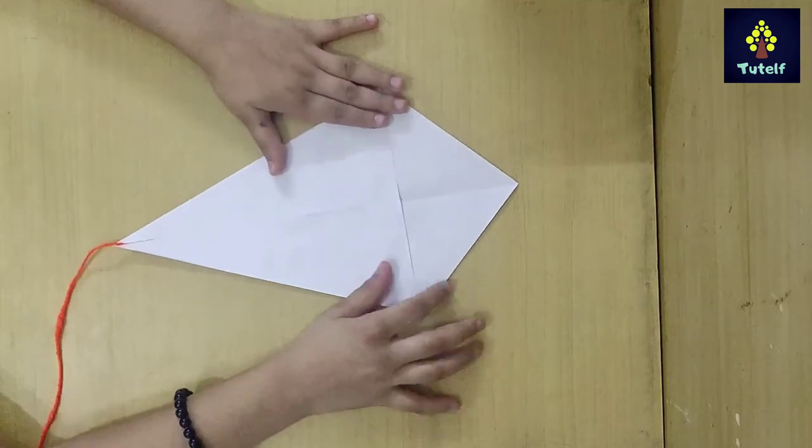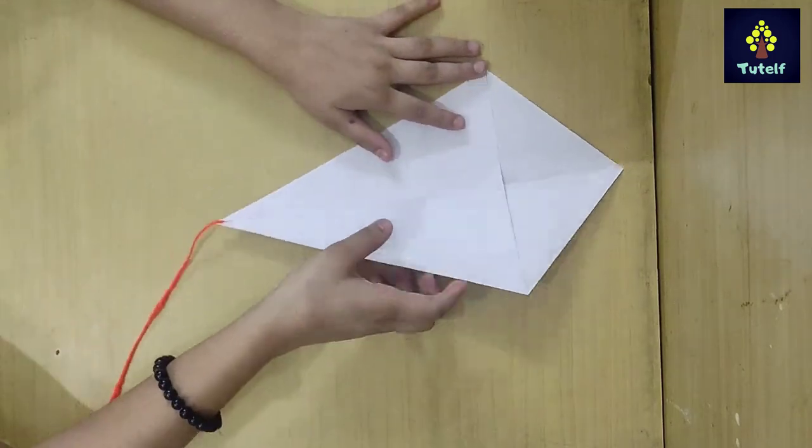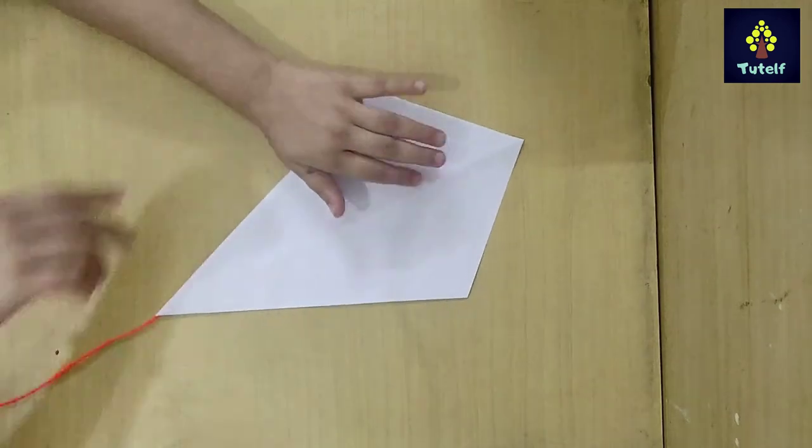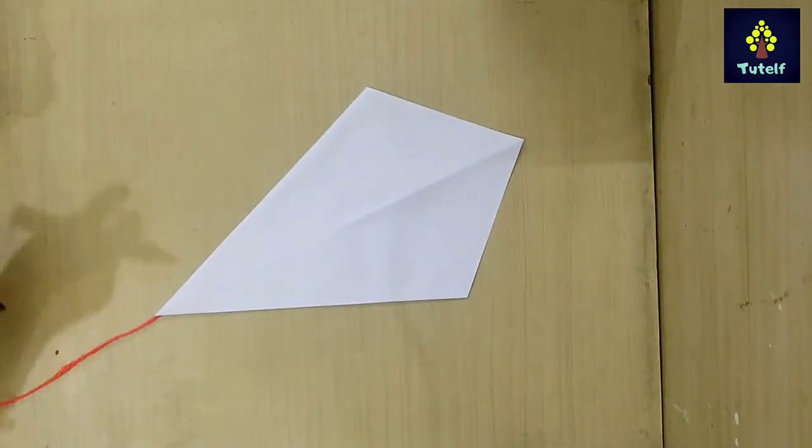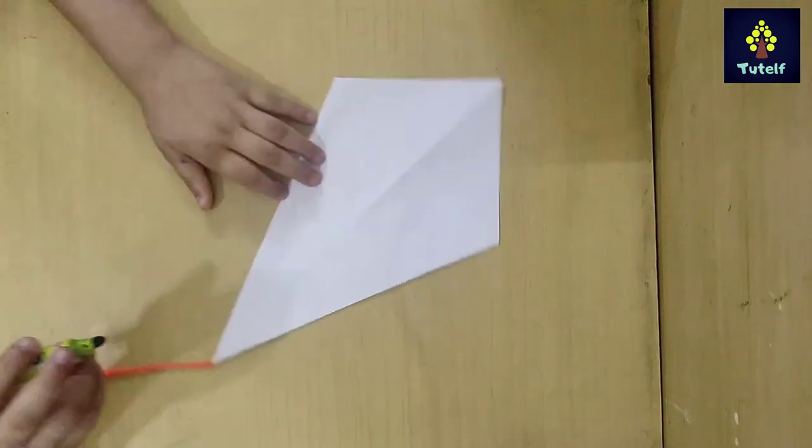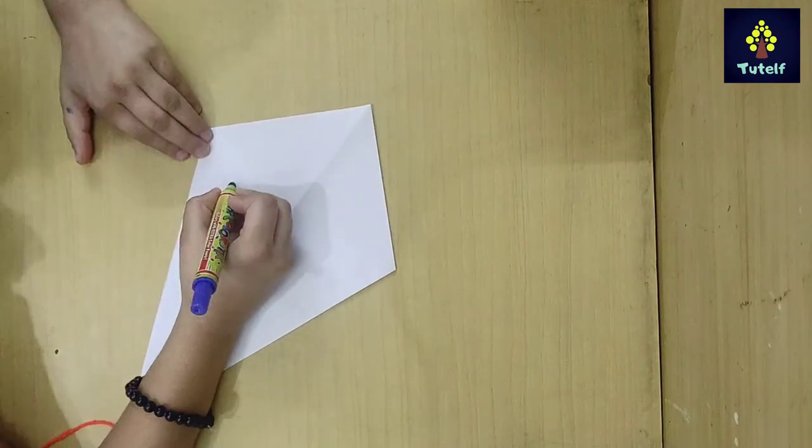Now look at our kite. It's also a kite. Now I'll do the decorations here. You can also write your name. I'm just writing my channel here.